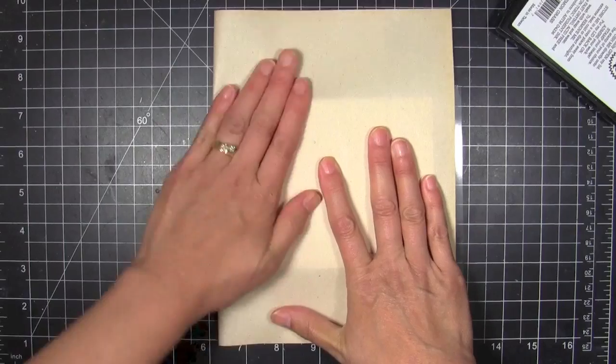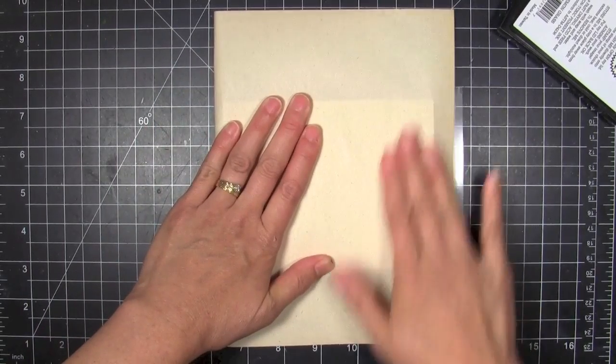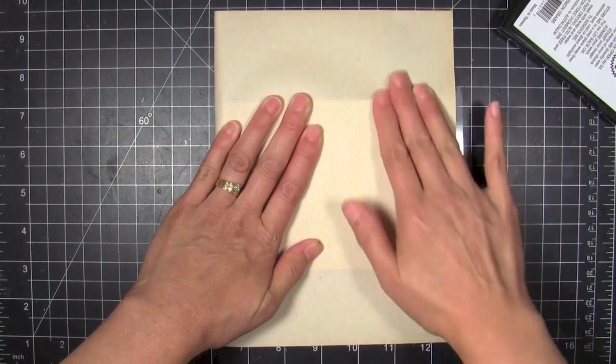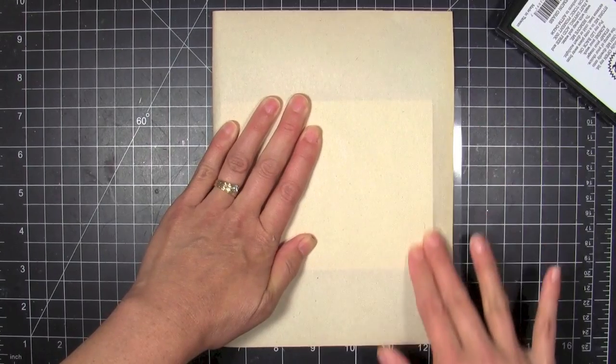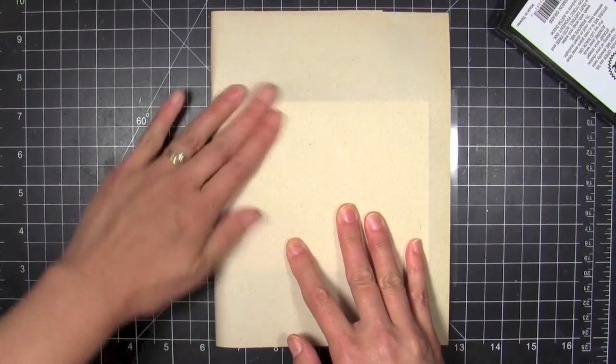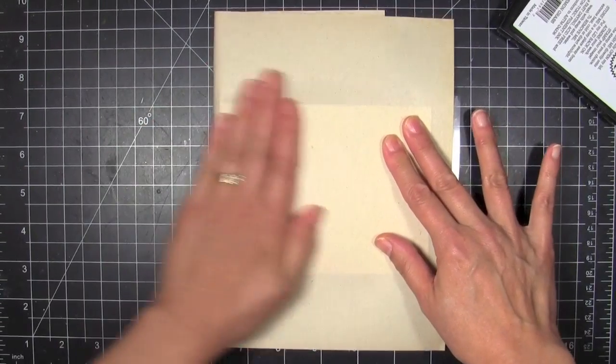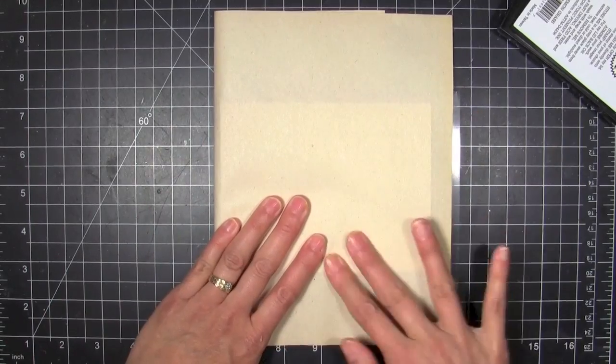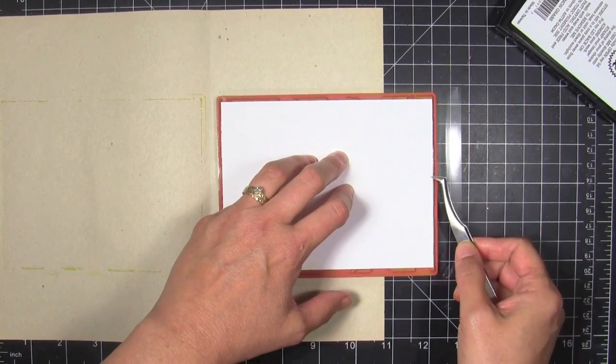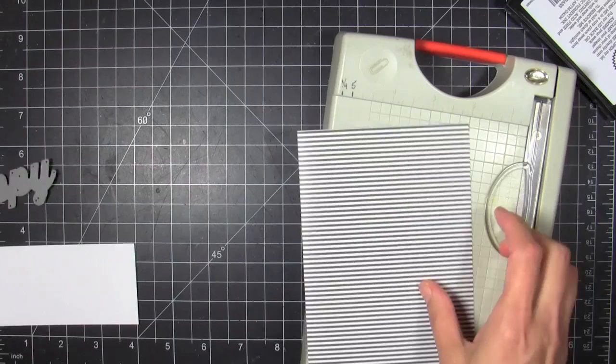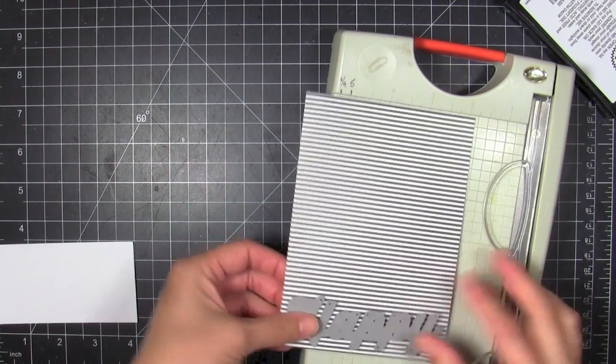I'm gonna go ahead and take my piece of cardstock and put it face down onto the inked up stamp and then use scratch paper over the top of that to burnish from the backside. This way I'll get a really nice even impression. When I lift up there I've got a nice impression and I'll set it aside to dry.